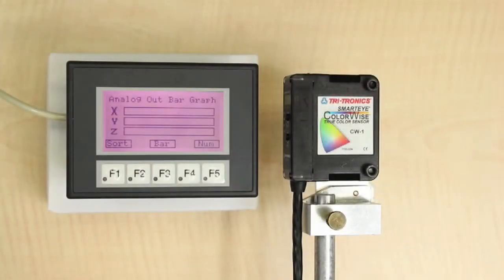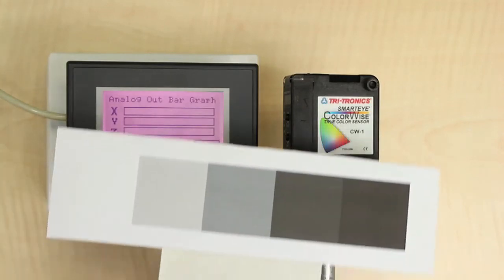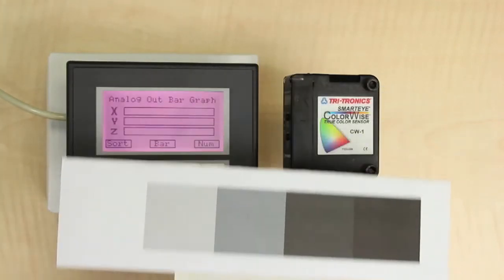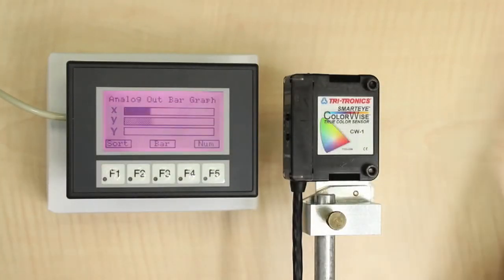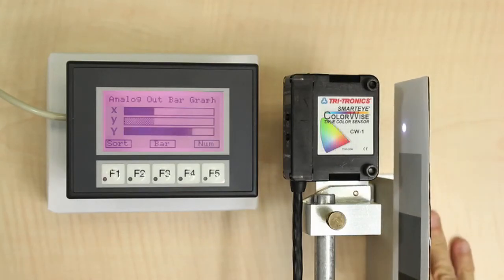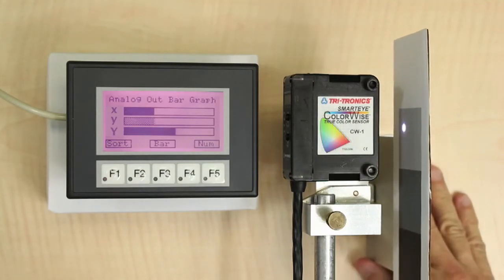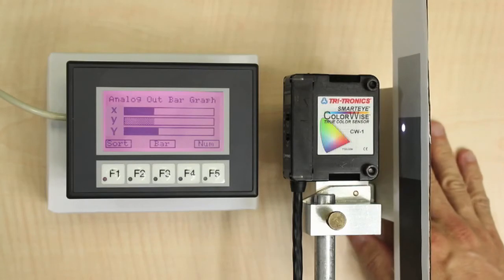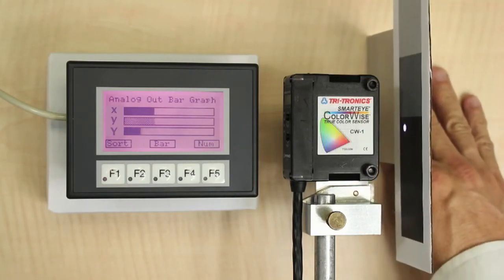Let's look at a few examples for the XYY type output, as we did with the XYZ type output. Again, we have black, white, and several shades of gray in between. All of these are spectrally the same, but have a different intensity level. We can see that for all these samples, the XY values remain relatively stable, and only the Y or intensity value varies.